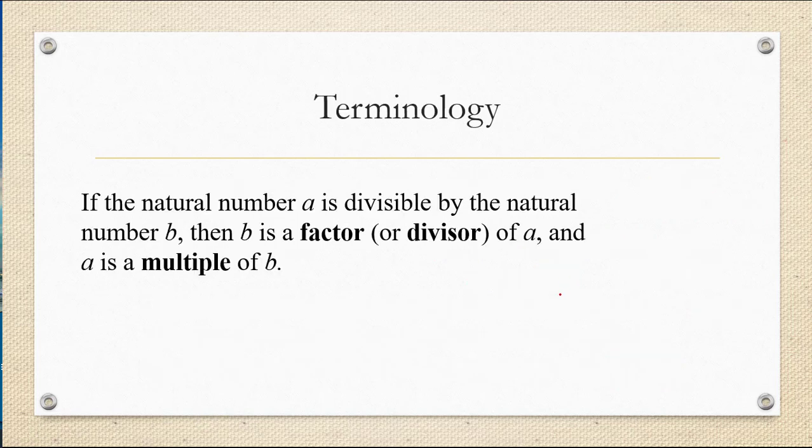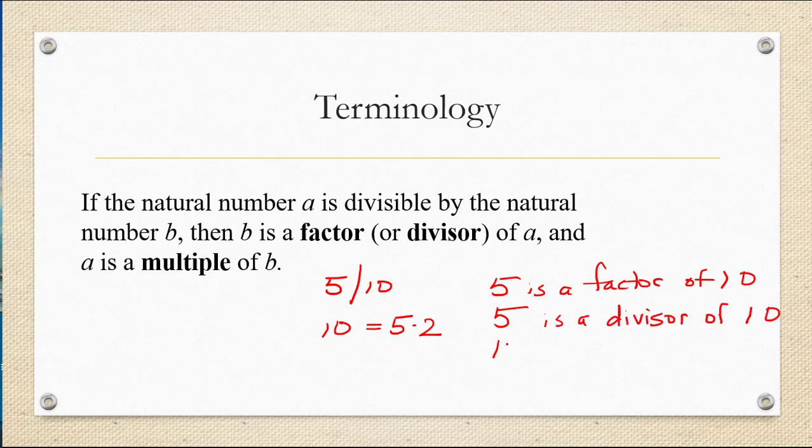There are lots of different terms that we can use to explain the same relationship. Since 5 divides 10, meaning that 10 can be written as a product of 5 and another number, we can explain that same relationship by saying that 5 is a factor of 10. We could also say 5 is a divisor of 10 or we can say 10 is a multiple of 5. All of these really imply the same relationship, which is to say that 5 goes evenly into the number 10.